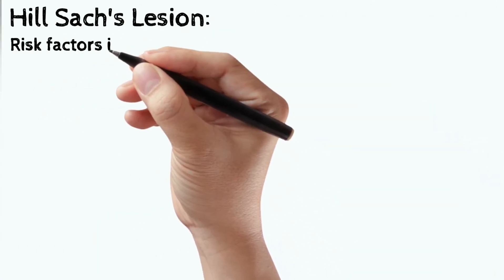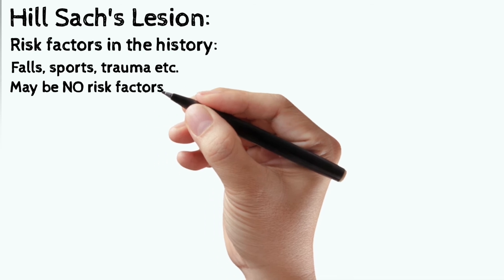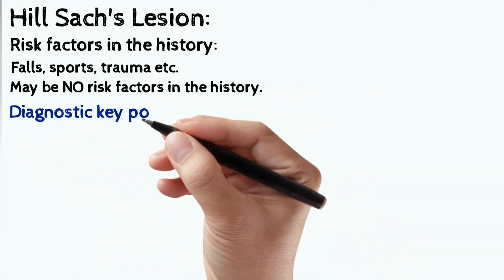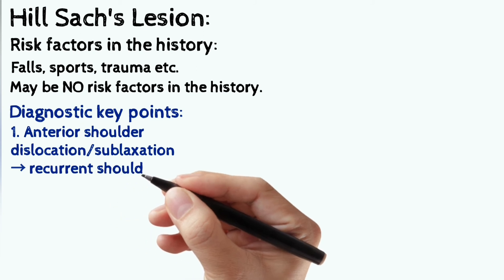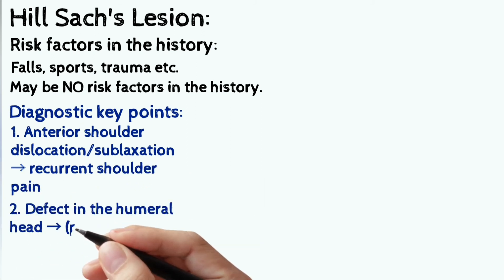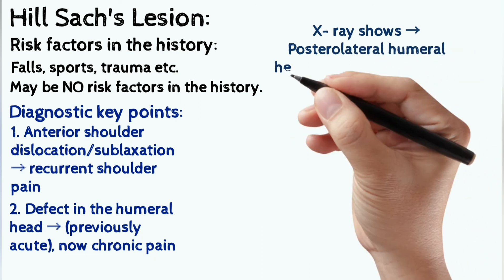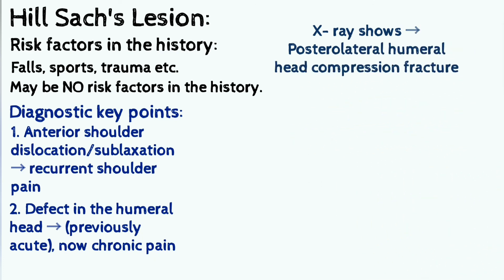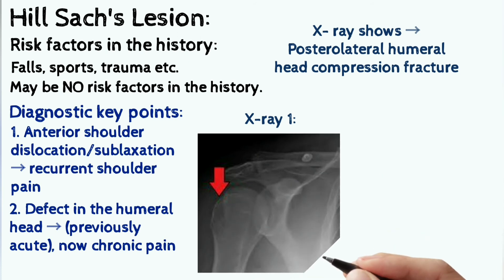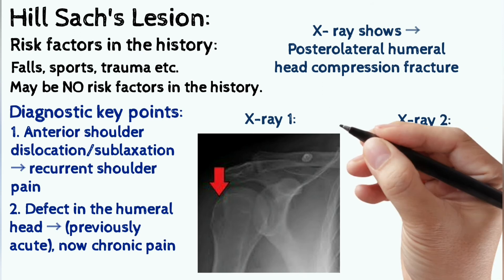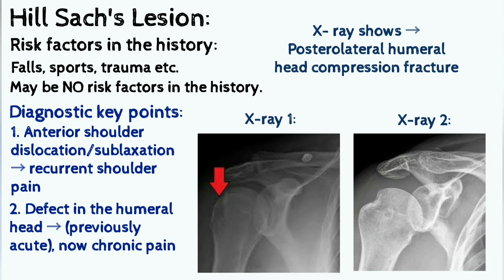Hill-Sachs lesion — risk factors include falls, sports, and trauma, or there may be no risk factors. The patient presents with anterior shoulder dislocation or subluxation causing recurrent shoulder pain, and a defect in the humeral head causing previously acute but now chronic pain. X-ray is needed, which shows the posterolateral humeral head compression fracture. In x-ray one, the red arrow is indicating a lesion in the humeral head; in x-ray two, on the same side of the humeral head, there is a lesion.